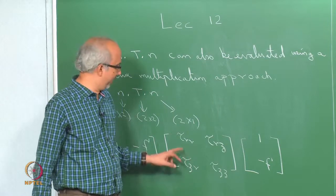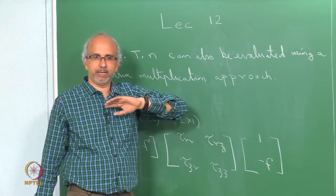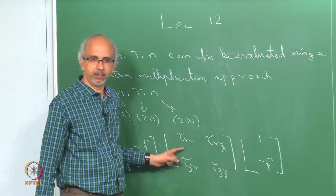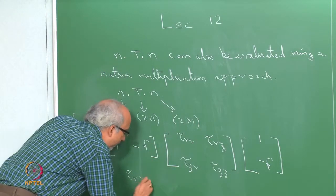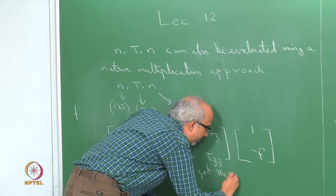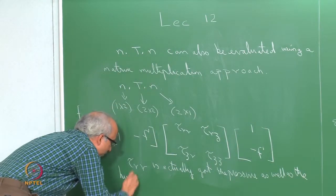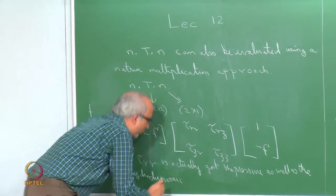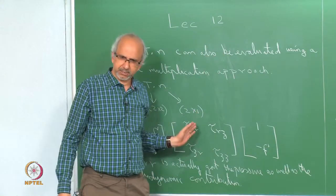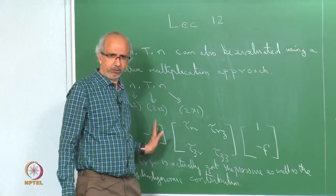Remember that tau_rr is actually sigma because it is a normal component — it includes both pressure and hydrodynamic contribution. So tau_rr should be written as minus P plus tau_rr (the deviatoric part), and similarly tau_zz as minus P plus tau_zz. You separate out the P and get your pressure gradient term outside.